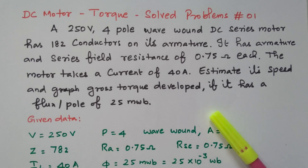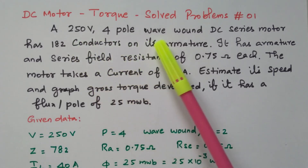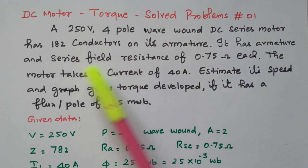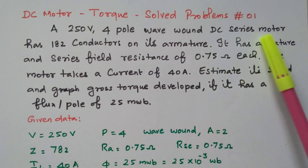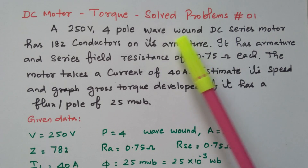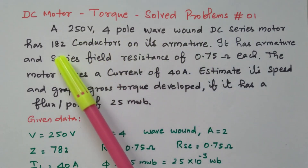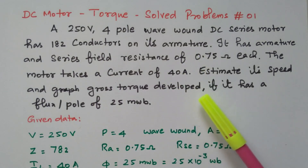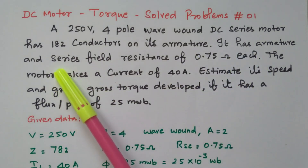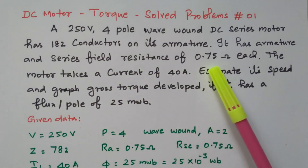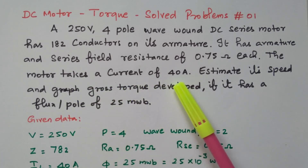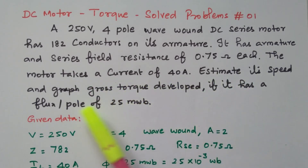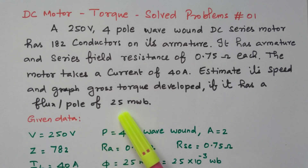Now we will go to the problem. A 250 volt, 4-pole, wave-wound DC series motor has 782 conductors on its armature. It has armature and series field resistance of 0.75 ohm each. The motor takes a current of 40 ampere. Estimate its speed and gross torque developed, if it has a flux per pole of 25 milliweber.